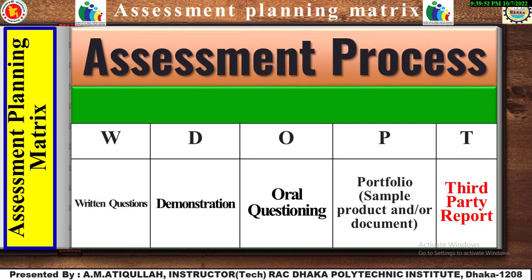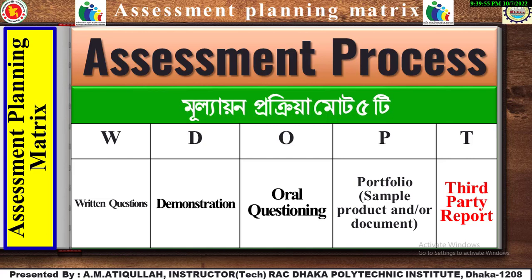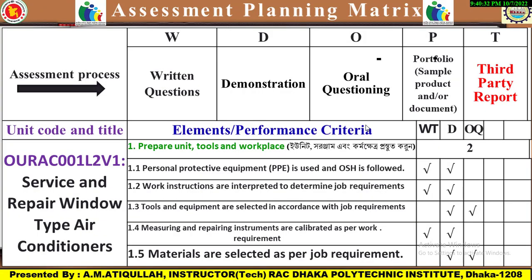The assessment process methods are: W for written questions, D for demonstration, O for oral questioning, P for portfolio, and sample product and document, and third-party report. This is the past tier method of assessment procedure. The assessment process report is one of the matrix planning tools.